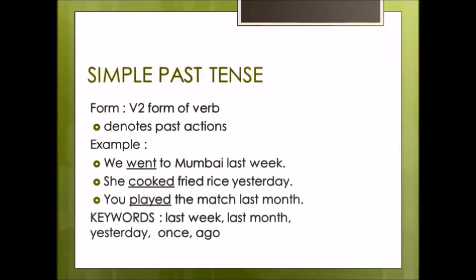The next type is simple past tense. The structure is V2 form of the verb — it denotes a past action that has already been completed. Examples: 'We went to Mumbai last week' (V2 of go is went). 'She cooked fried rice yesterday' (V2 is cooked). 'You played the match last month' (V2 is played). Keywords for simple past tense: last week, yesterday, last month, once, ago.